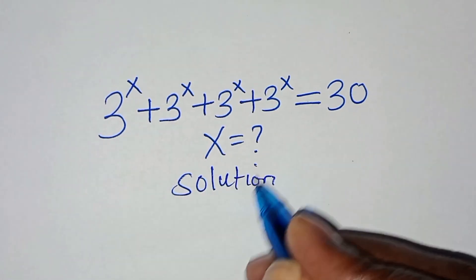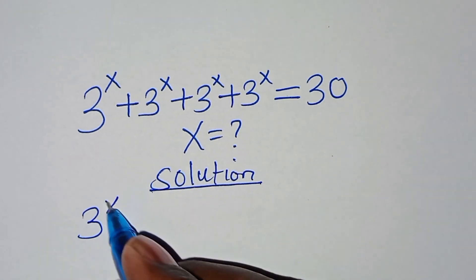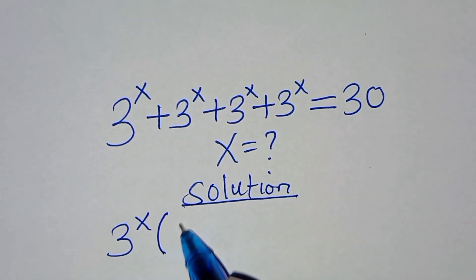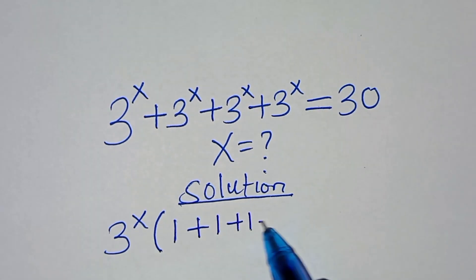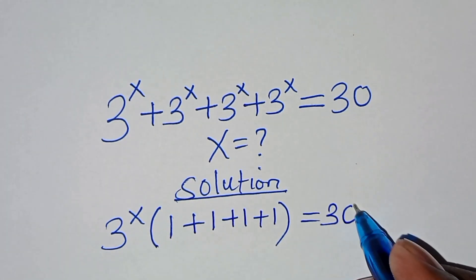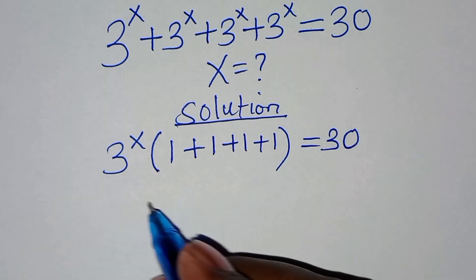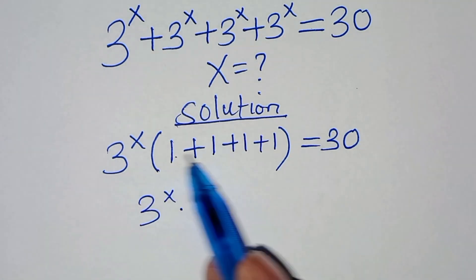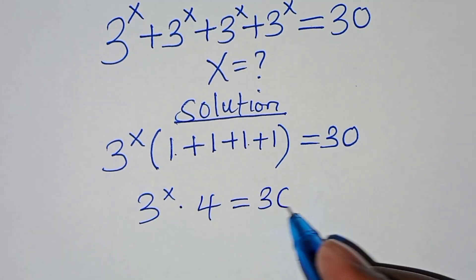Solution: from here, 3 to the power x is common, so we factor out 3 to the power x, and therefore here we'll have 1 plus 1 plus 1 plus 1. The next step: we'll have 3 to the power x multiplied by 1 plus 1 plus 1 plus 1, which is 4, and this is equal to 30.